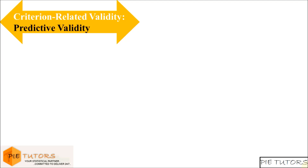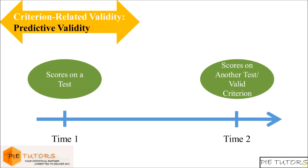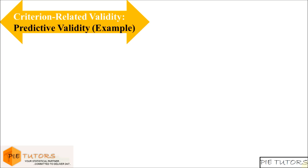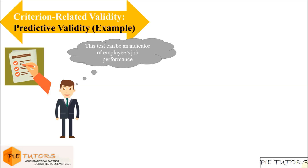The second type of criterion-related validity is predictive validity. Predictive validity is the degree to which the scores on a test are related to the scores on another test administered at some future time. Alternatively, predictive validity refers to the ability of a test to measure some event or outcome in the future. For example, suppose you develop a cognitive test and claim that it can be used as an indicator of job performance of an employee.